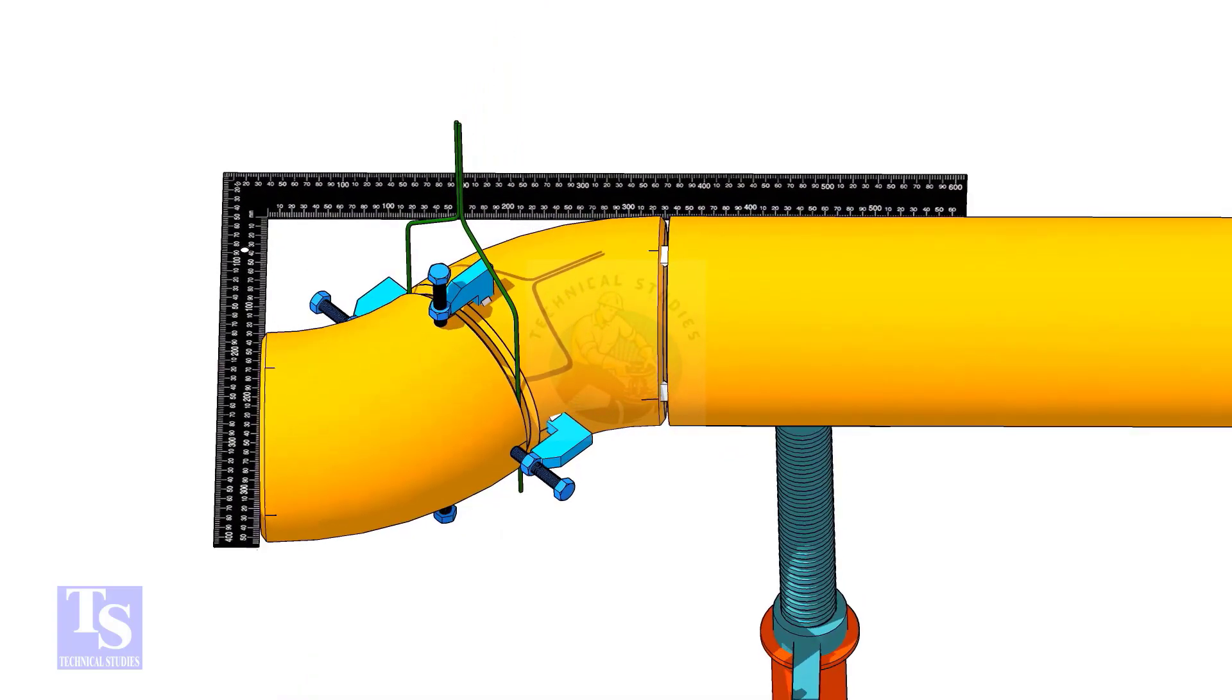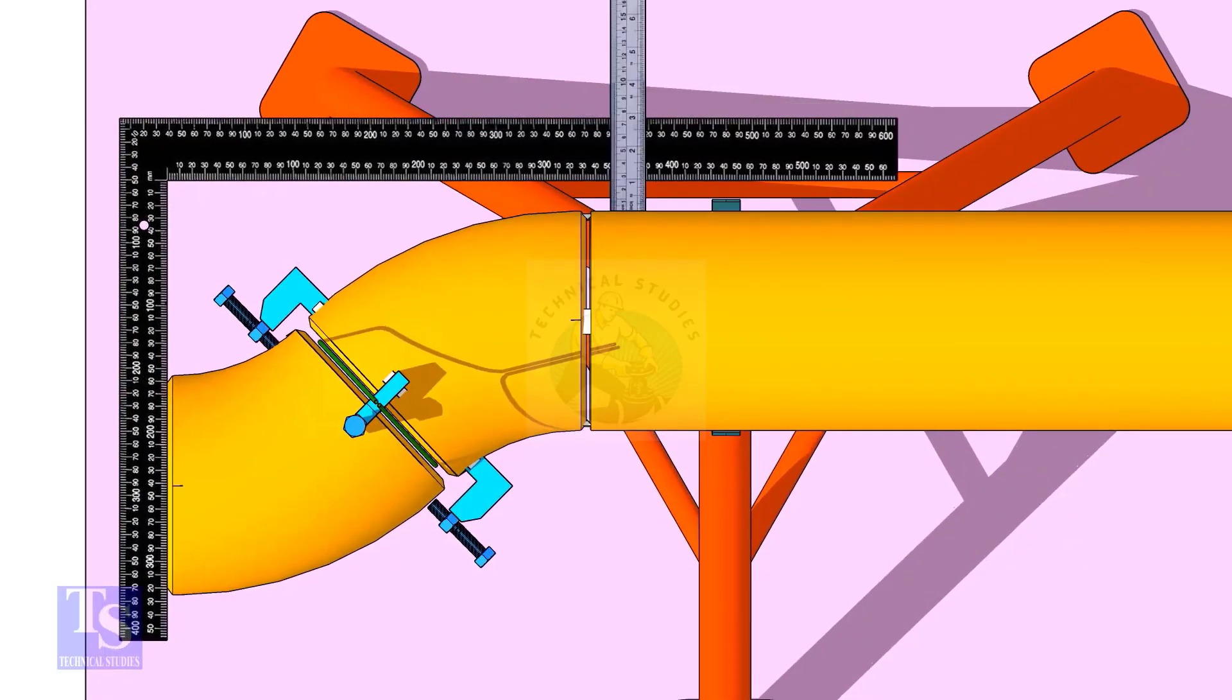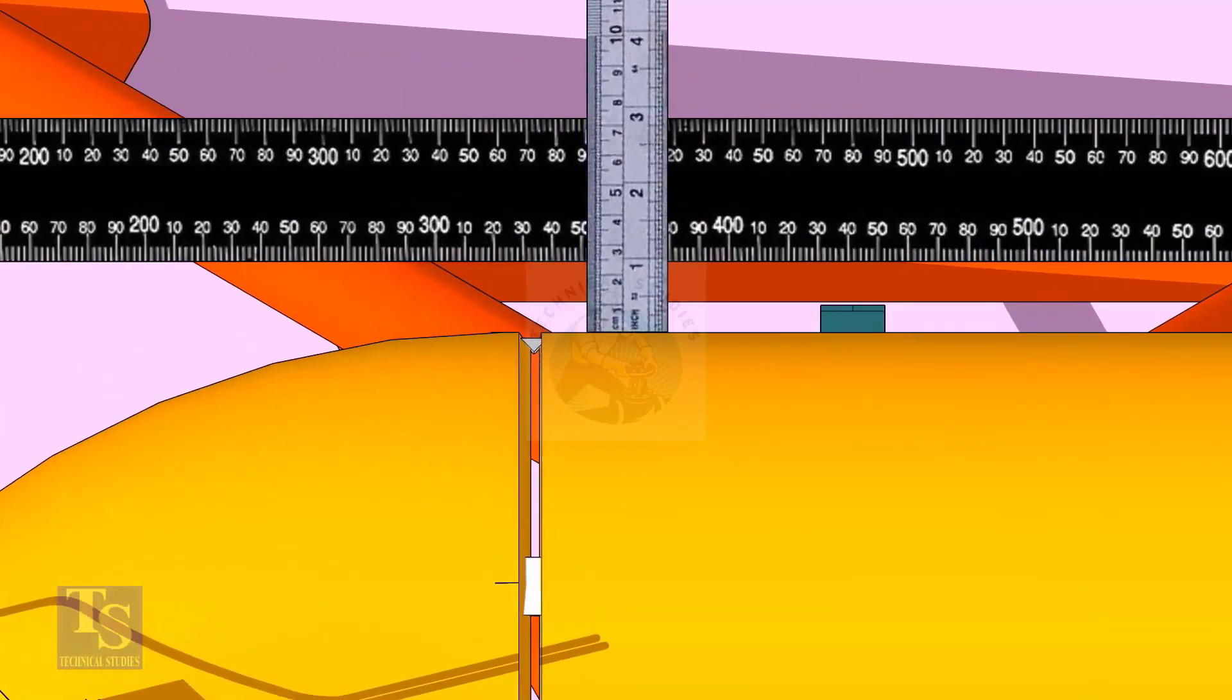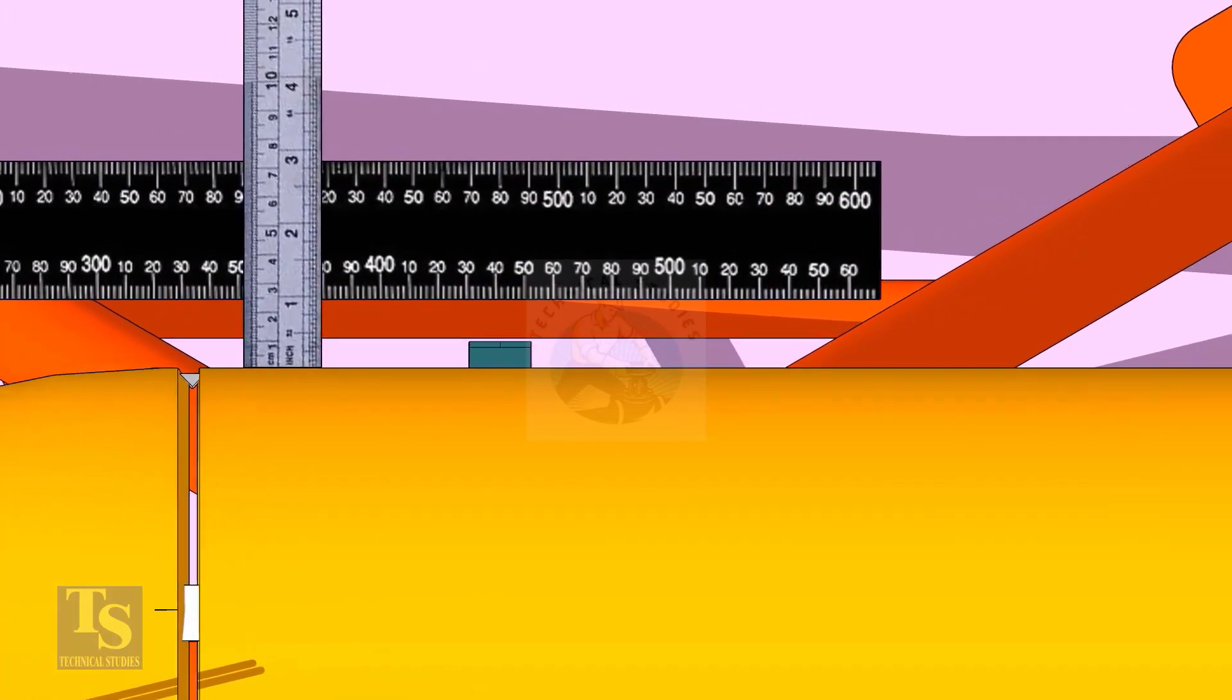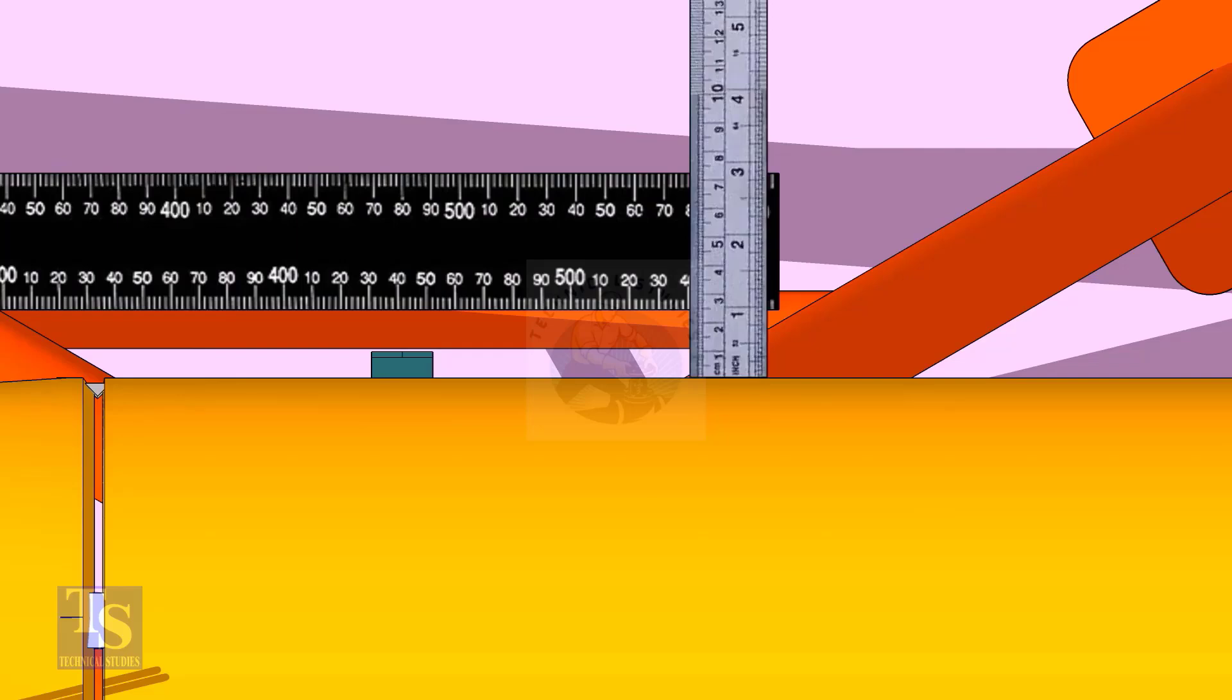Put a large right angle on the face of the elbow as shown and check the distance between the right angle and the pipe. Make sure both measurements are the same.